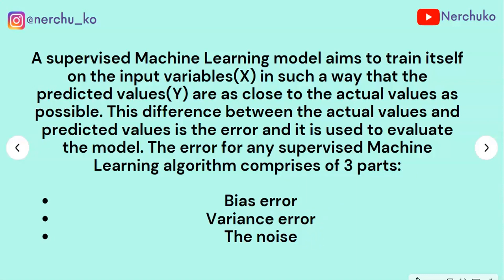A machine learning model is trained on independent variables. When we have new data and predict using the model, we get a predicted value. The difference between the predicted values and the dependent values is the error. The three components are: bias error, variance error, and noise.